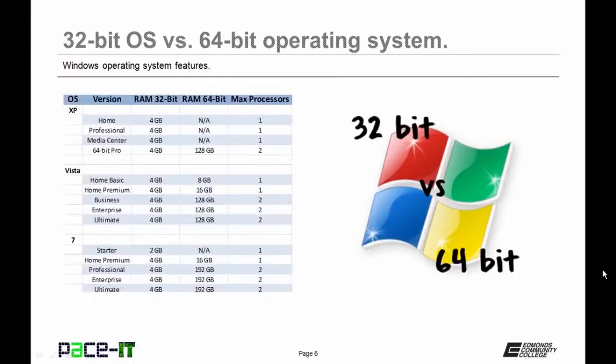Here's a slide that shows how much RAM each version of Windows will address, and also how many processors. The Ultimate and Pro versions are the ones that are best if you want a powerhouse system.